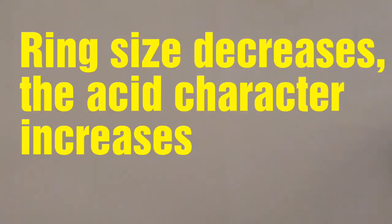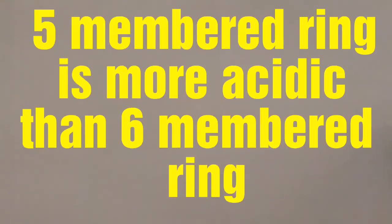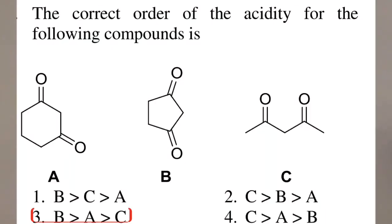Let us compare between A and B. As the ring size decreases, acidity increases. Therefore the five-membered diketones will be more acidic than the six-membered. B will be greater than A which will be greater than C. So option C is the right choice.